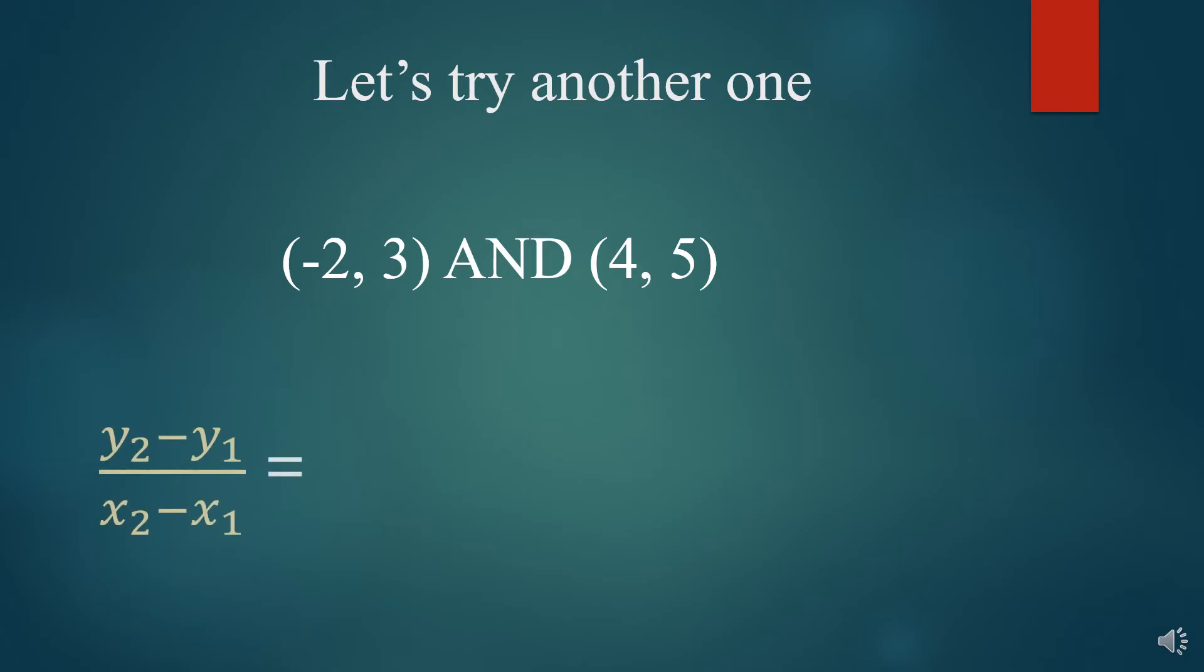All right, now let's try another one. So let's take two new points. We've got negative 2 and 3 and 4 and 5. So this is our slope formula. And what we're going to do is we're going to subtract the y's in a backwards fashion, 5 minus 3. And then we're going to subtract the x's in a backwards fashion, 4 minus negative 2.